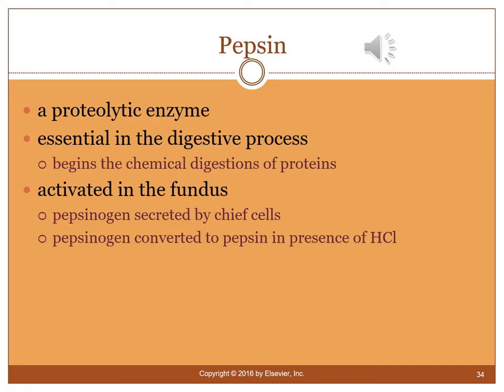Pepsin is a proteolytic (protein-breaking-down) enzyme that begins the chemical digestion of proteins. It is activated in the fundus when pepsinogen, secreted by chief cells, is converted to pepsin in the presence of hydrochloric acid that exists in the stomach.